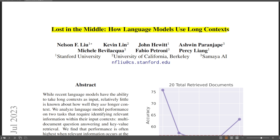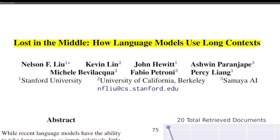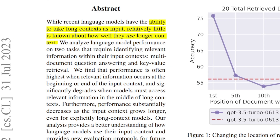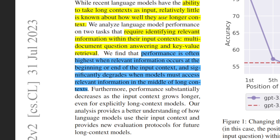Let me quickly introduce you to this paper titled 'Lost in the Middle: How Language Models Use Long Context.' This was an important paper and it specifically looked at the performance of LLMs with large context windows. One of the most important findings was that if you are looking for information present either at the beginning or at the end of the context, the model tends to perform really well.